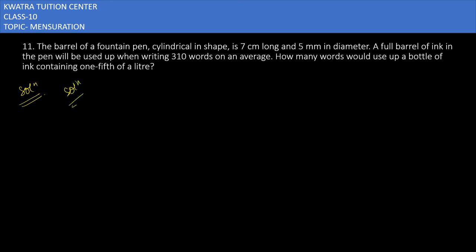Moving to question number 11. The barrel of a fountain pen, cylindrical in shape, is 7 cm long and 5 mm in diameter. A full barrel of ink in the pen will be used up when writing 310 words on average.